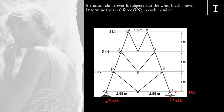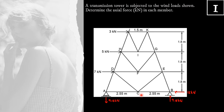Which joint do we analyze first? Remember that in a joint, the maximum number of unknown forces should be 2. For joint A, we have 2 unknown forces — so we can start at joint A. For joint B, we also have 2 unknown forces — so we can also start at joint B. At joint C, we have 4 unknown forces, so we can't start there. We may either start at joint A or joint B and work our way to the top.